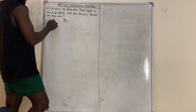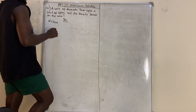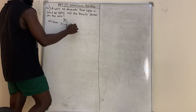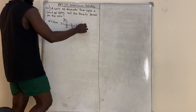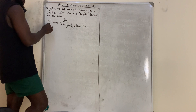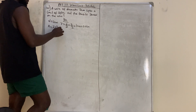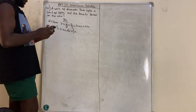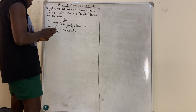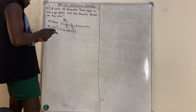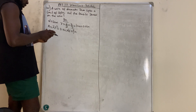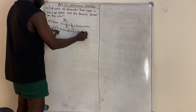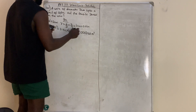They give us diameter = 2 cm. The radius is half of the diameter, so radius = 2 divided by 2 = 1 cm = 0.01 m. The area is π r² = 3.142 × (0.01)² = 0.0003142 m².